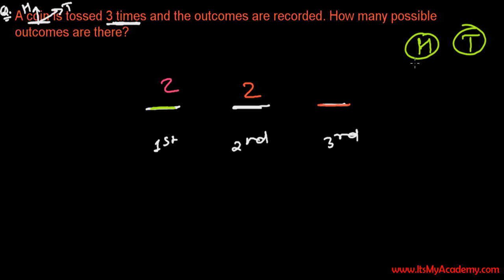And third time when you toss again, you may get head or you may get tail. So again there are two possibilities. So total two times two times two, that is eight. So total possible outcomes are eight.